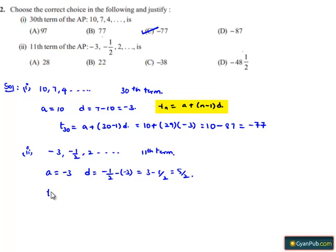T11 equals a plus (n-1) times d, which is -3 plus (11-1) times 5/2. This equals -3 plus 10 times 5/2, which is -3 plus 25, which equals 22.